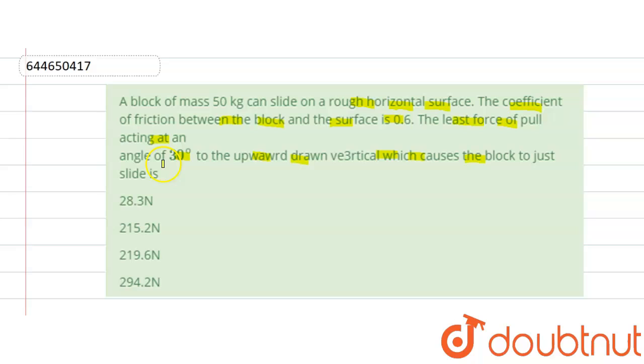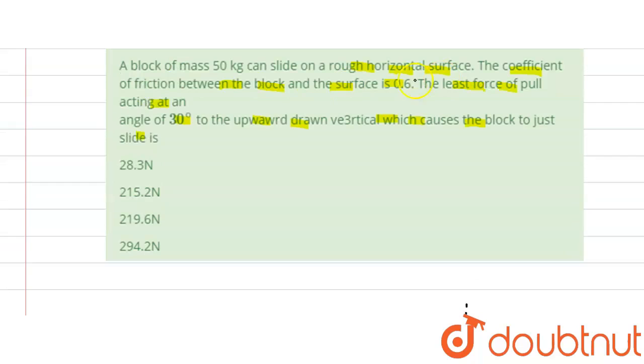So here firstly we see, this is the block and it's vertically here. Question says this is an upward drawn vertical, and here this least force pull acting here, means this force is like this, pull like this.